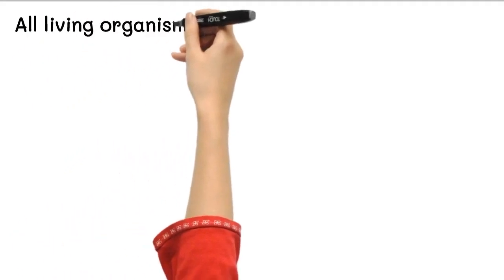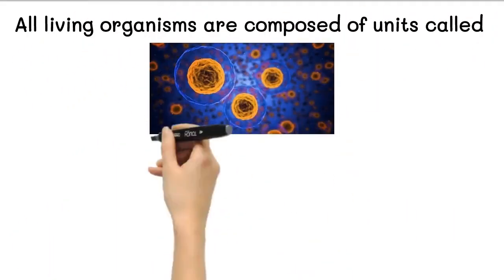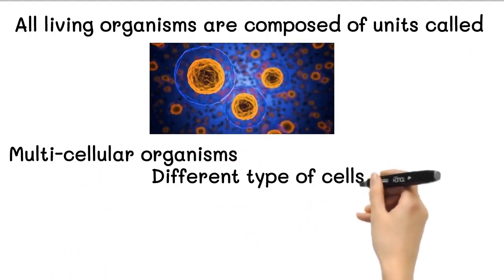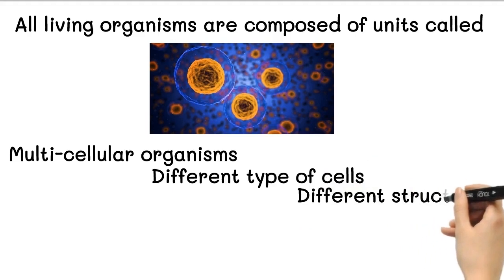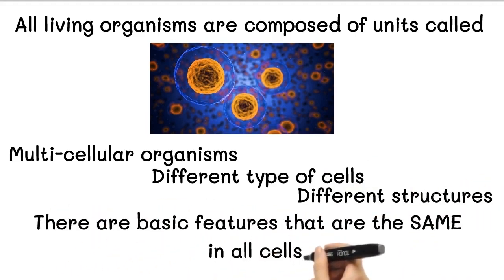All living organisms are composed of units called cells. In many cell organisms there may be hundreds of different types of cells with different structures. Despite all the differences, there are basic features that are the same in all cells.